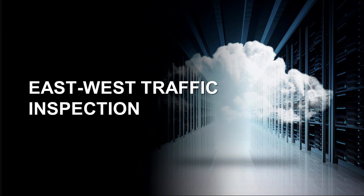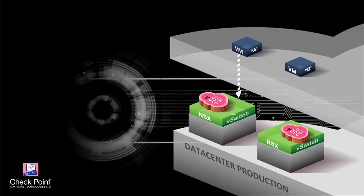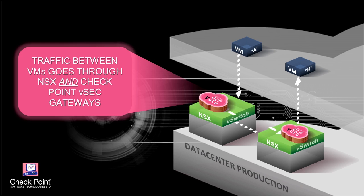Auto-deployment works by instructing vCenter that whenever a new member joins a cluster, it should deploy the VSEC agent and apply the existing policy. Whatever VMware system is operating on top of the hypervisor and moves around will be protected by the same security policy decided from the management system. It integrates with the NSX manager and talks directly with both vCenter and the NSX manager, deploying seamlessly. The idea is to deploy east-west traffic inspection between systems — security policies based on dynamic objects, meaning IP addresses can change and systems can move, but the policy still applies.